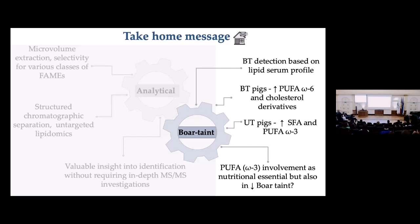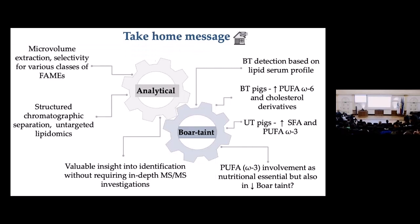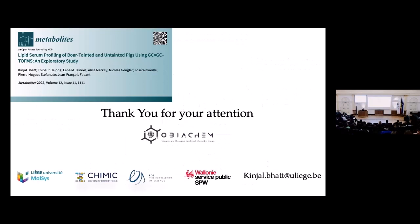There are guidelines suggesting we should feed pigs an omega-3 nutritionally rich diet because ultimately humans consume the meat and it helps maintain a good nutritional balance. But thinking the other way around — there might be some involvement of omega-3 in boar taint production. There is a question mark because it is a small sample set of 40; we will do more work with hundreds of samples and come up with a fuller conclusion, but it is an intriguing possibility. This is a published open-access work — thank you for your attention.